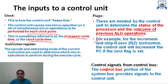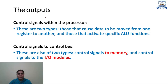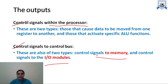Control signals from the control bus are also given as input to the control unit. There are three types of buses: data bus, control bus, and address bus. The control unit provides output in terms of control signals, which can be used within the processor or sent to memory or input/output modules via the control bus.